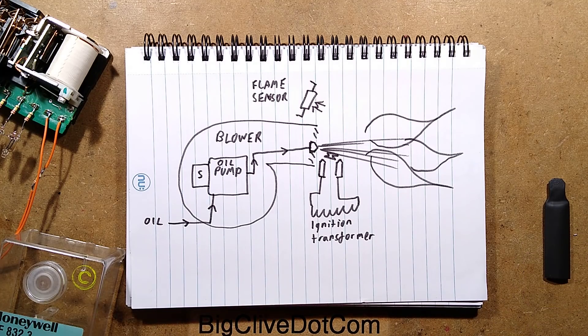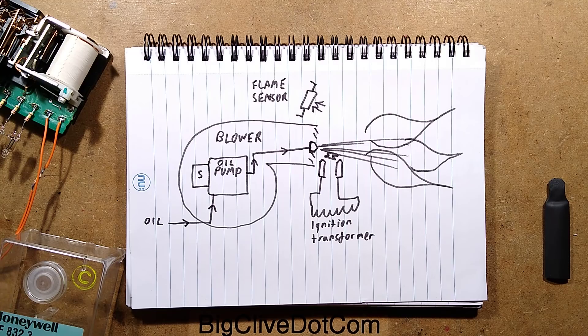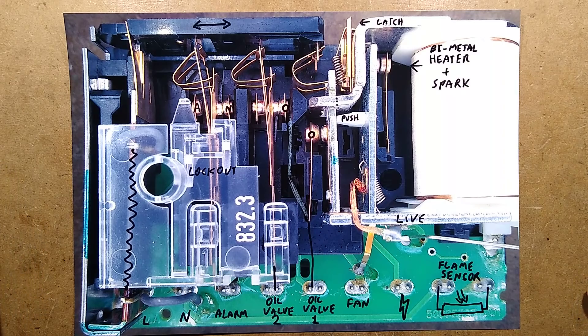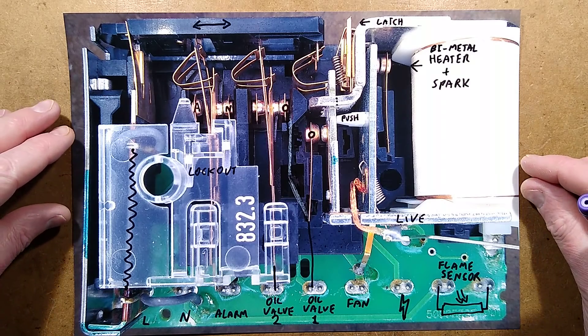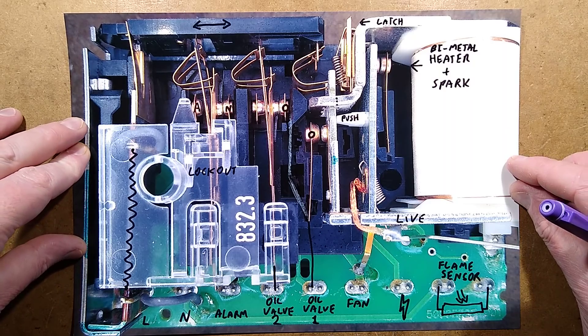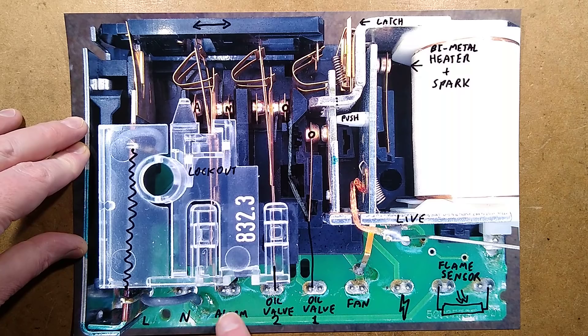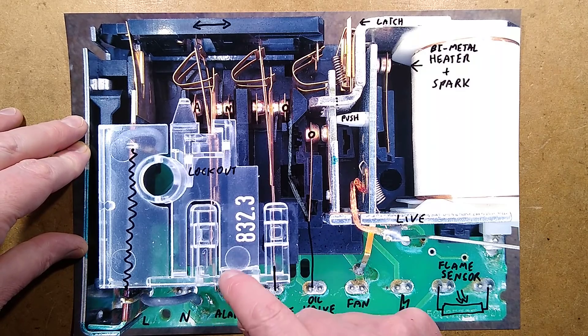If the flame goes out again, it will have another go at lighting it. If the flame goes out and stays out, it will automatically shut everything down and signal an alarm to the controller. It's all done in a very devious and clever way. Right, quick jump cut because I'm going to get the paperwork in to show you how this system operates.